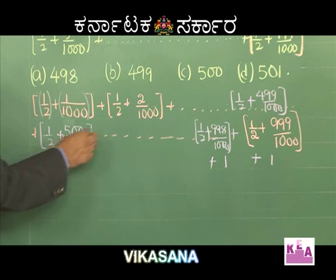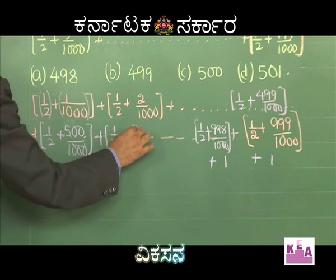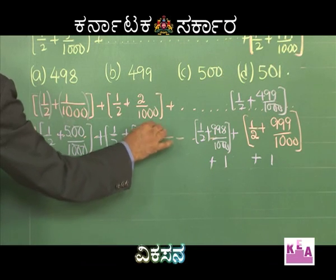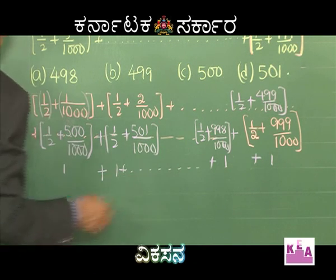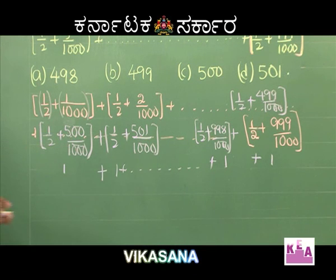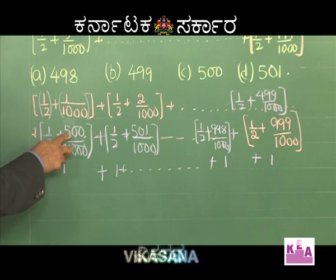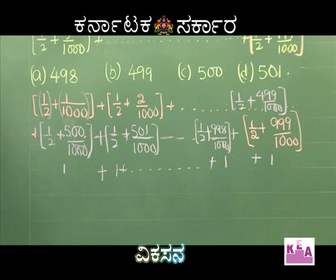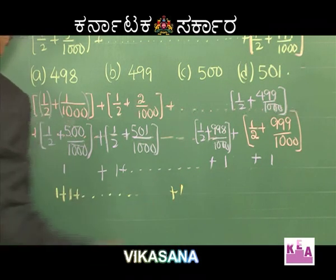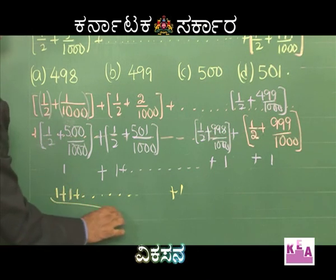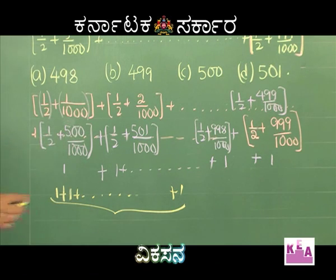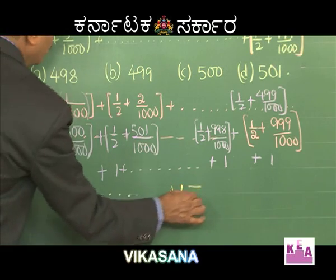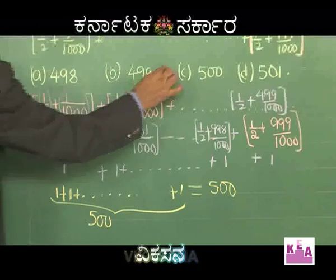The number of terms that give GIF value of 1 runs from 500 to 999. The count is 999 minus 500 plus 1 = 500 terms. Just as from 0 to 99 we have 100 numbers, from 500 to 999 including 500 we have 500 numbers. That means 1 is added 500 times, giving a total sum of 500. Therefore option C, which is 500, is correct.